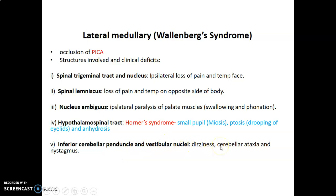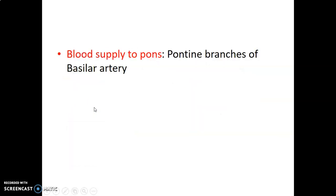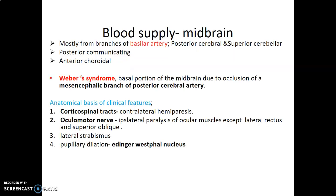The inferior cerebellar peduncle and vestibular nuclei are also located in the region supplied by PICA, so when there is occlusion of this vessel there will be dizziness, cerebellar ataxia, and nystagmus — nystagmus being oscillatory eyeball movement. It is this posterior portion supplied by PICA that leads to lateral medullary syndrome. Regarding blood supply to the pons, you have the pontine branches: the paramedian supplying the pons around the basilar groove, followed by short circumferential fibers, then long circumferential fibers extending toward the lateral aspect of the pons.